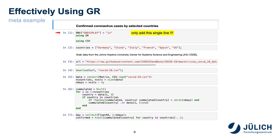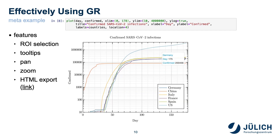How can you use the GR meta layer? In scripts that have used the GR convenience layer exclusively, a single line is sufficient. The meta layer is used if an environment variable called GRDisplay is set accordingly — a single line before importing the GR module is sufficient, and the rest of the code does not need to be modified. A script that was designed for unidirectional output in a terminal can be provided with interactive elements in this way. At the HTML link given here, you can try the new functionality without having to build your own Jupyter or Julia instance.